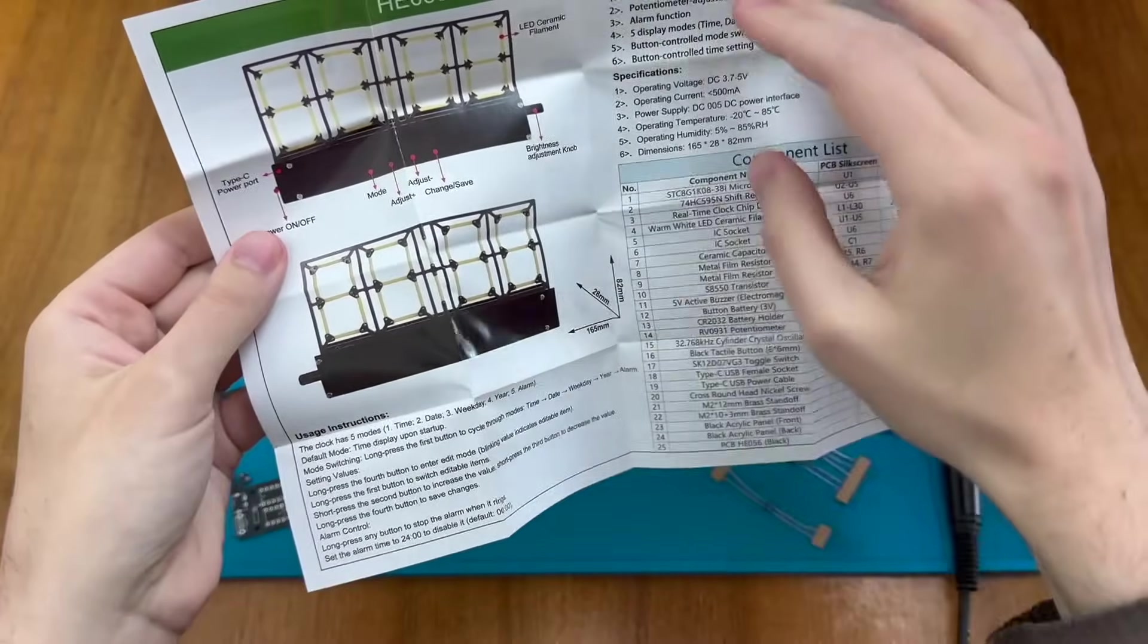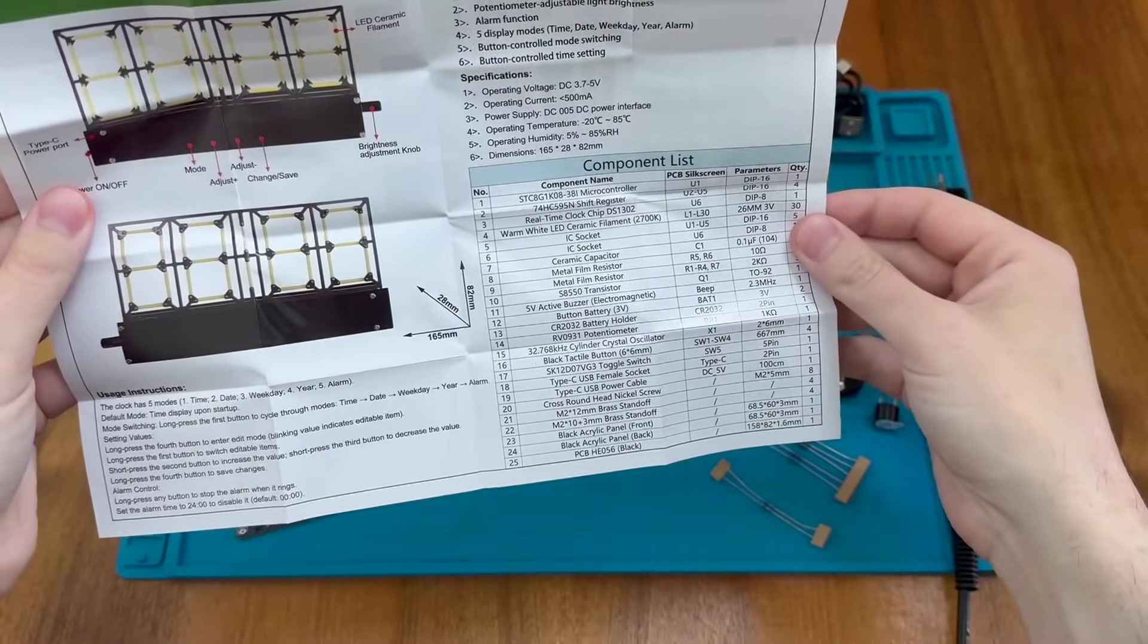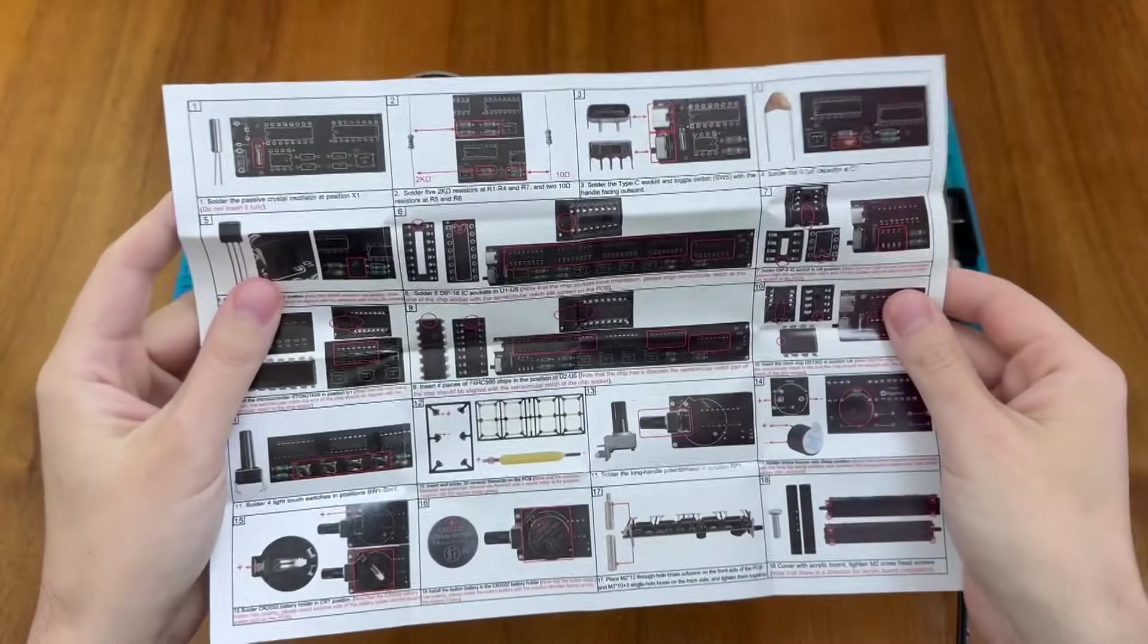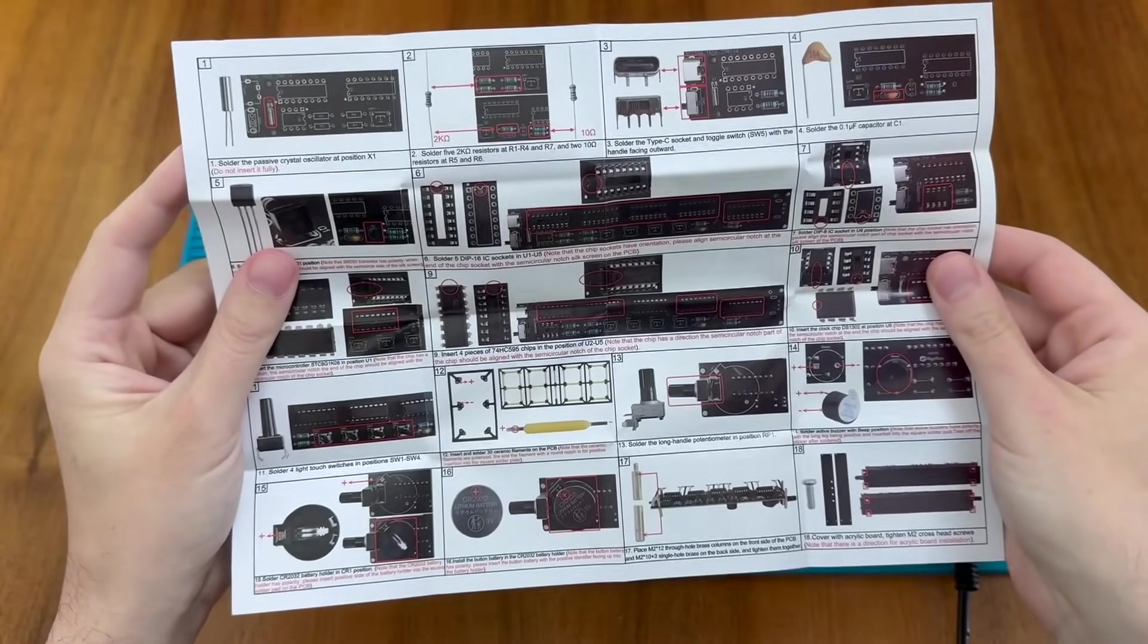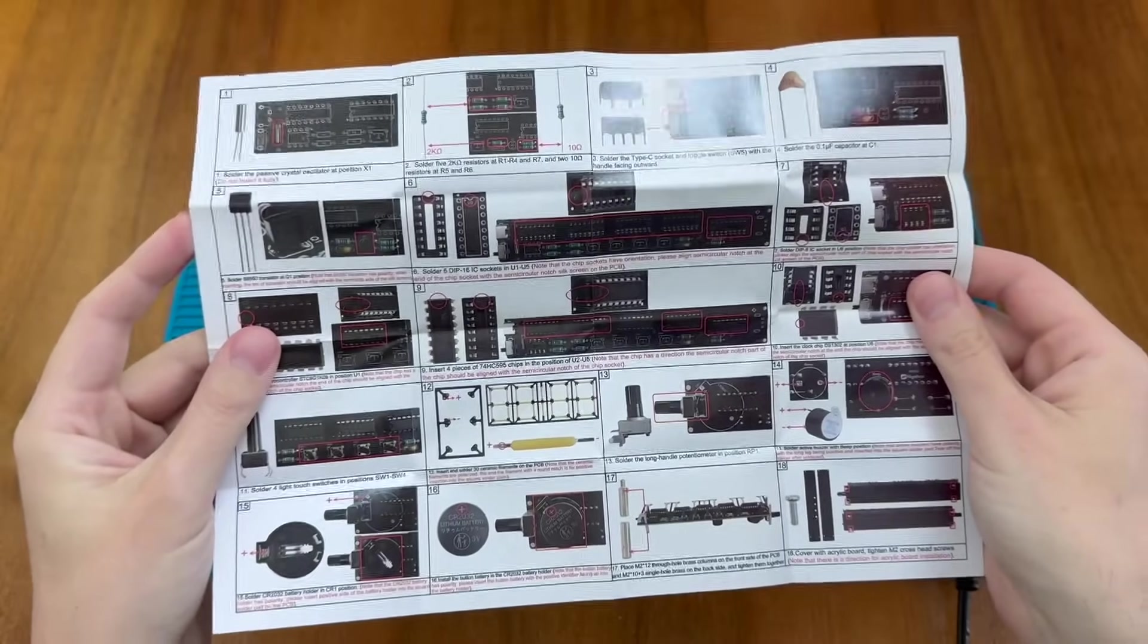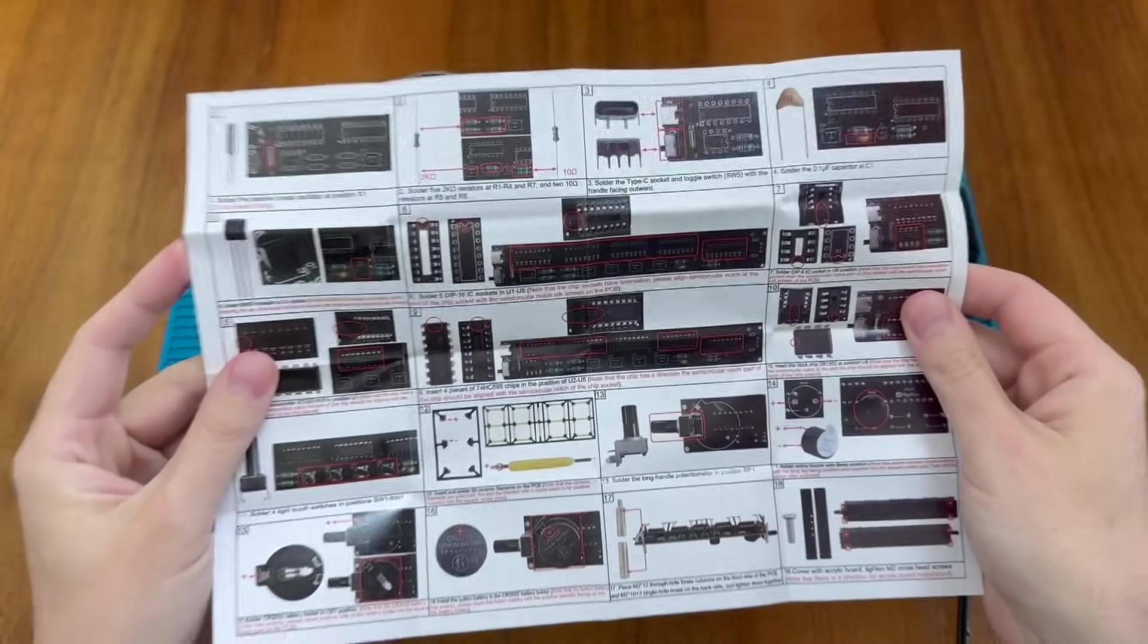Some usage instructions and features, a list of all the parts we expect to have. And then on the back here we have some step-by-step instructions which I'm going to follow in the assembly of this kit. So now we know what we have and what we need to do. Let's go ahead and get started.